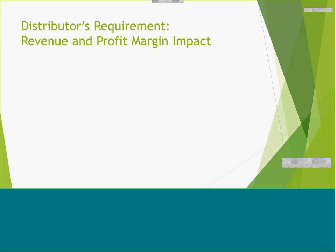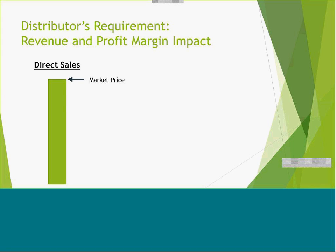I'm going to start with value, profit, and margin — how these impact more components. We can see which items we need to consider that impact revenue. It's pretty straightforward: you have a product you want to sell at market price, you have a cost to produce it (the COGS), and the direct profit margin is just the difference between COGS and the market price.